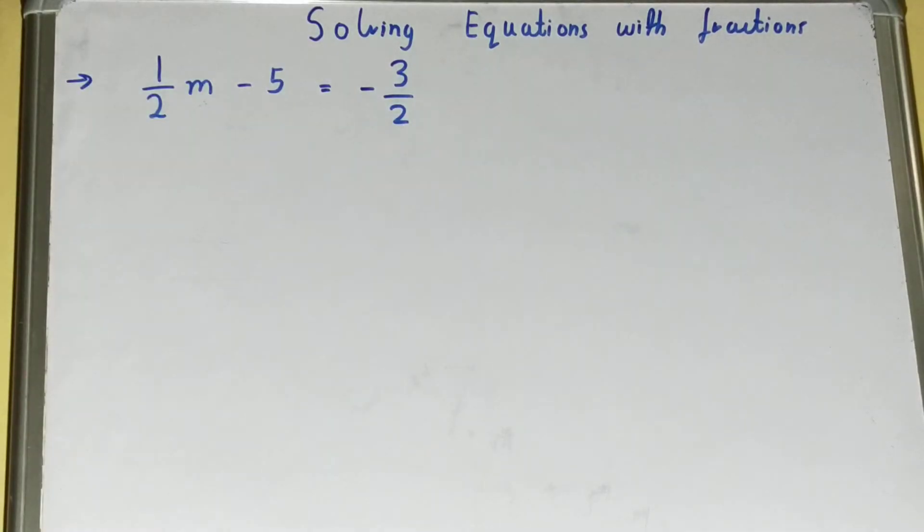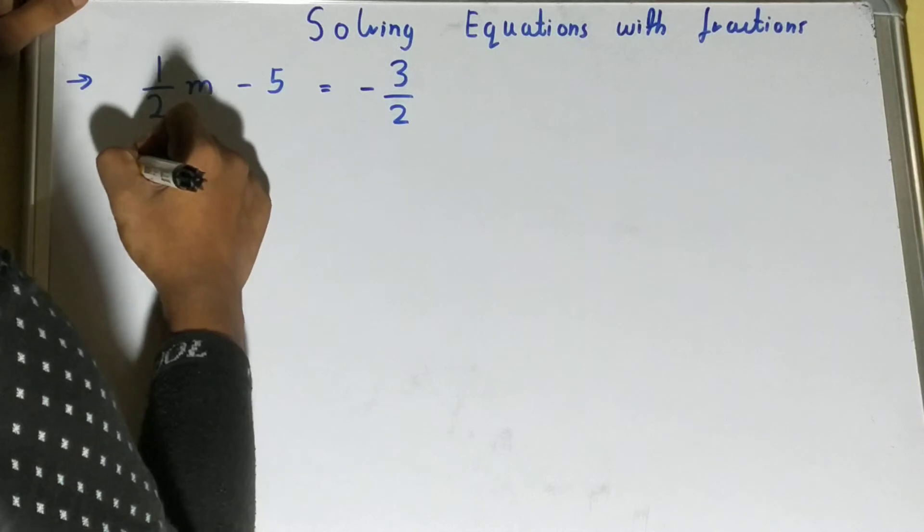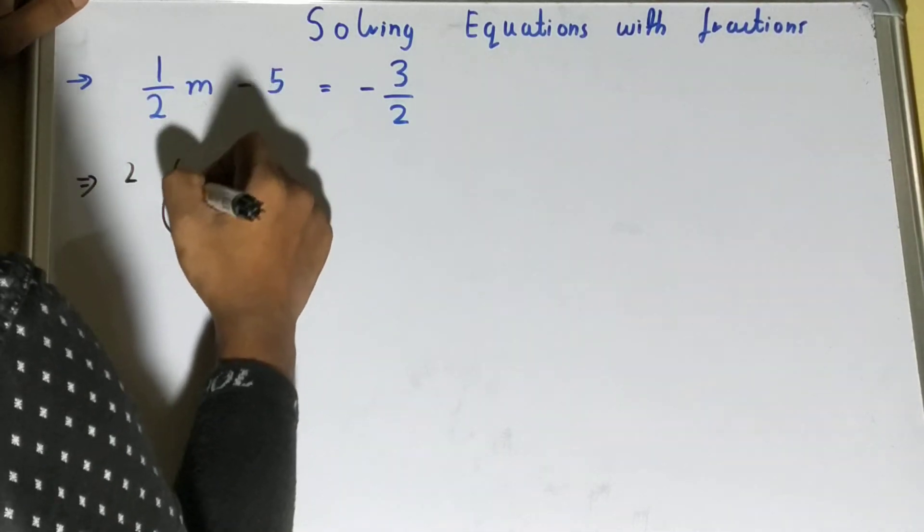The first thing we need to do is get rid of these fractions, right? Then further go with the solving. To get rid of this fraction, we need to multiply both sides by two. Then we will get rid of these fractions. Let's multiply both sides by two.